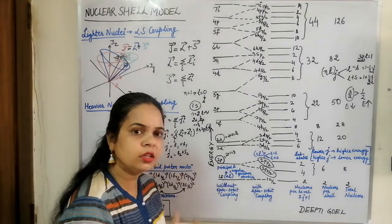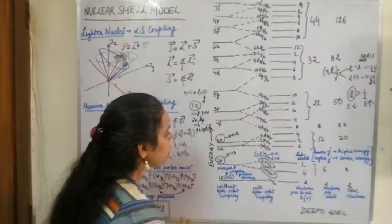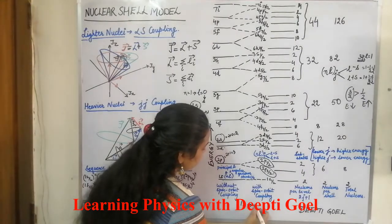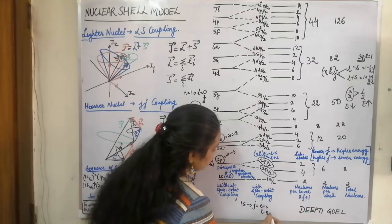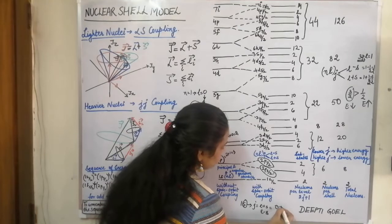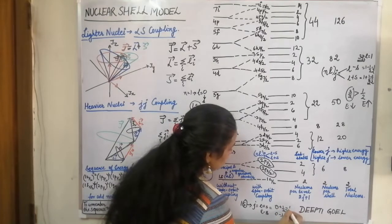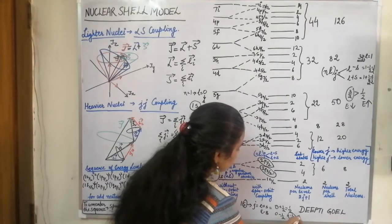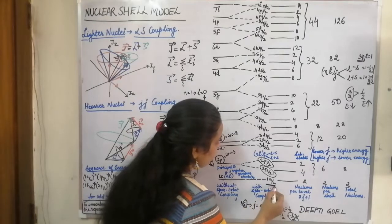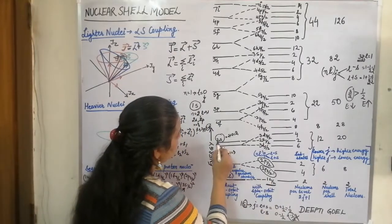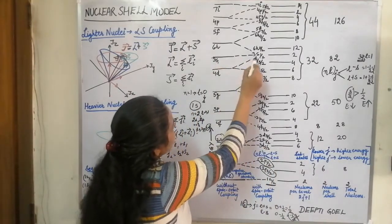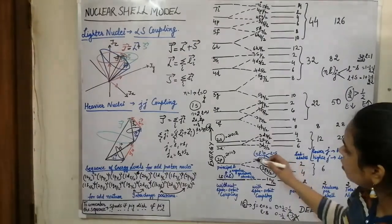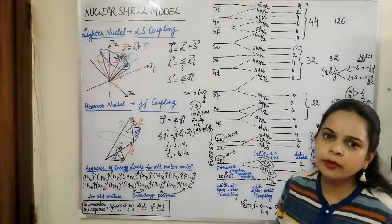Higher the value of J, lower the energy; lower the value of J, higher the energy. Why is there no splitting of the S level? For S, L=0, so J would be 0 plus half and 0 minus half. Since negative J values are not allowed, the S level cannot split — it has only one level. So 1S has only 1S 1/2, 2S has only 2S 1/2, and 3S has only 3S 1/2. All P, D, F, G levels split into two sub-levels.